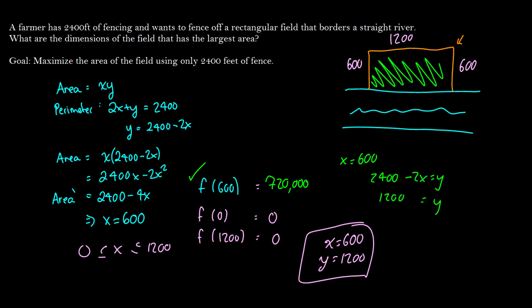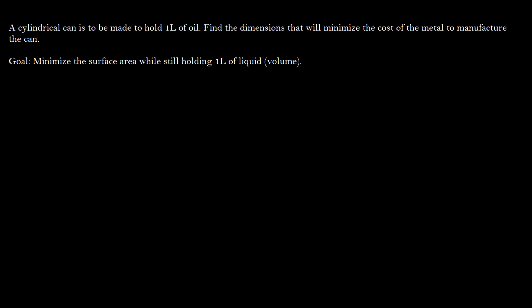Another one that's more common is a can optimization problem where we say this cylindrical can is to hold one liter of oil. So one liter is equal to 1000 centimeters cubed. So we want to find the dimensions that will minimize the cost of the metal to manufacture the can. So in other words, our goal is to minimize the surface area of the can while holding a constant one liter of volume.